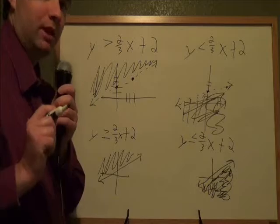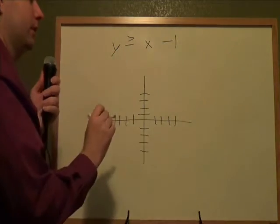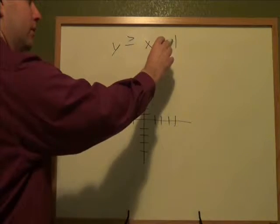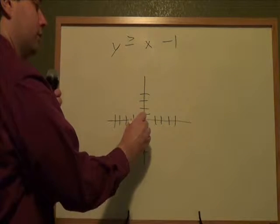So let's do some more examples. y is greater than or equal to x minus 1. So our starting point is that minus 1. That's my y-intercept. From the very middle, go down 1, put the first point there.